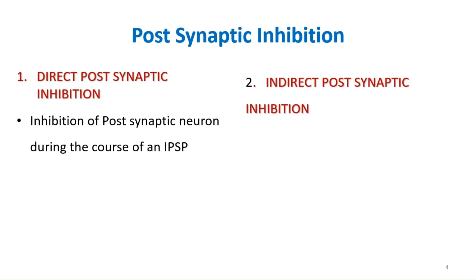In direct postsynaptic inhibition, an IPSP is produced in the postsynaptic neuron. In a normal synapse, the presynaptic neuron releases a neurotransmitter such as GABA or glycine, which produces an IPSP in the postsynaptic neuron and inhibits it. That is direct postsynaptic inhibition.